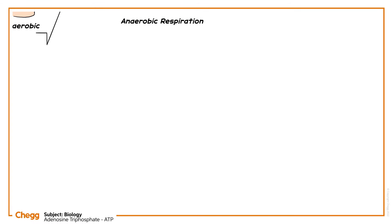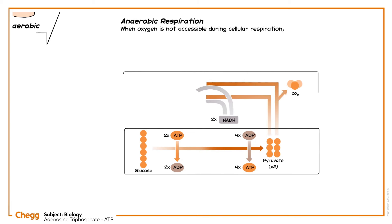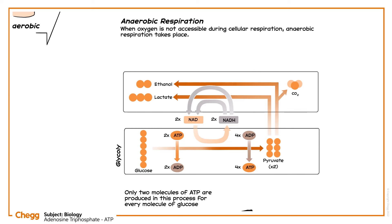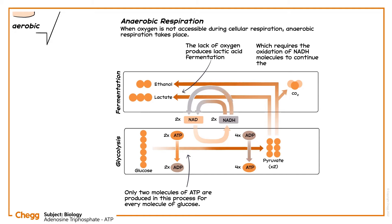Moving on to anaerobic respiration. When oxygen is not accessible during cellular respiration, anaerobic respiration takes place. Only two molecules of ATP are produced in this process for every molecule of glucose. This is because the lack of oxygen produces lactic acid fermentation during cellular respiration, which requires the oxidation of NADH molecules to continue the reaction.